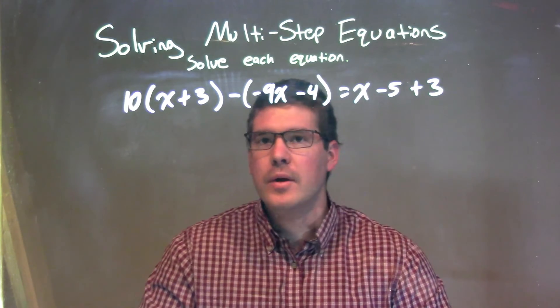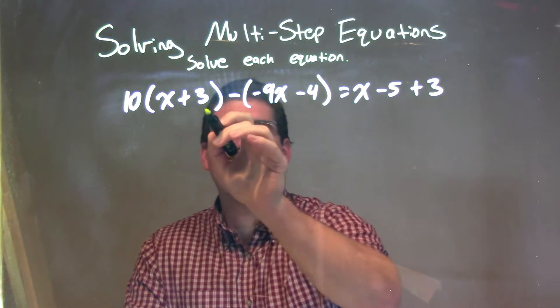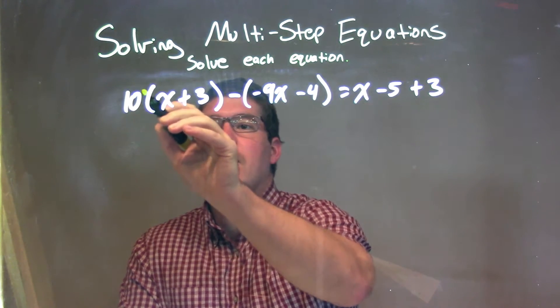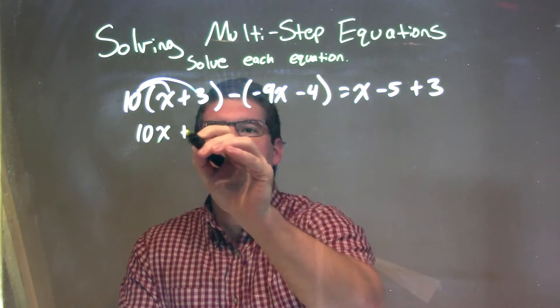What I want to do here is combine my like terms on the left and right-hand side. To do so, I have to distribute. I'm going to distribute the 10 across. So you have 10 times x, which is 10x, and 10 times 3, which is 30.